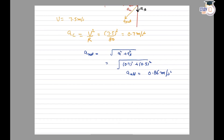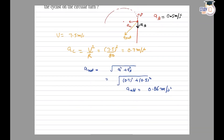To find the direction, let's say the net acceleration makes an angle theta with the radius. We find theta as tan theta equals perpendicular upon base, where perpendicular is at and base is ac. This equals 0.5 divided by 0.7, so theta equals tan inverse of 5 by 7. Note that theta is the angle of net acceleration with the centripetal acceleration.